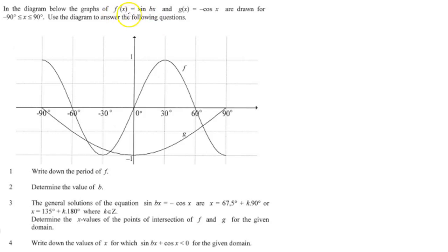We can clearly see that f(x), there's the graph f(x) and that is sin bx. g(x) is -cos x and there's g(x) there. It says write down the period of f. So let's look at this graph f. What do you notice?